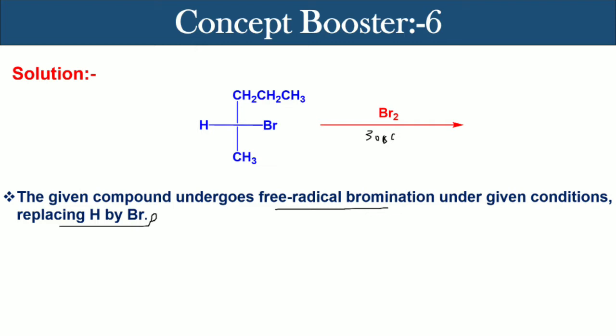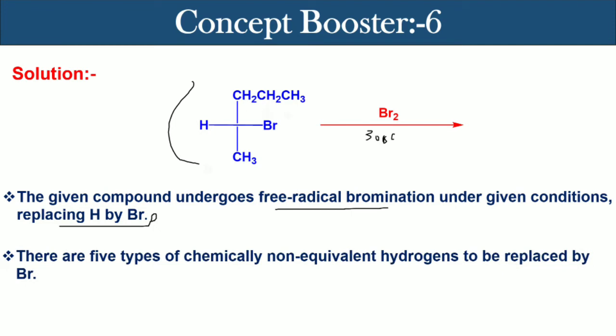There are five types of chemically non-equivalent hydrogens to be replaced by bromine, and the hydrogens are a, b, c, d, and e. Now, if hydrogen a is replaced by bromine atom, then product one will be formed.